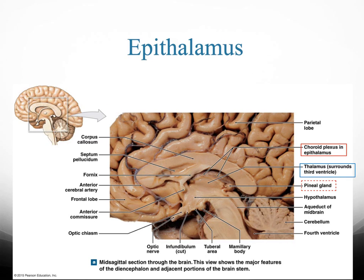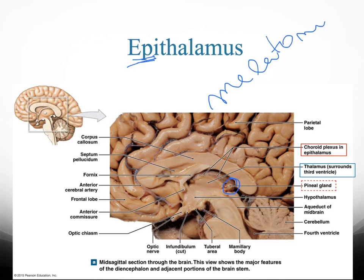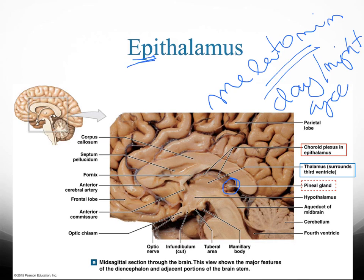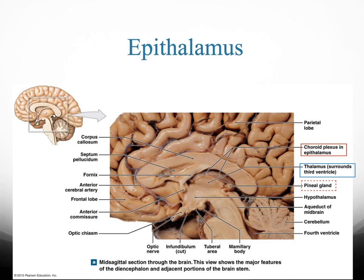Here's our epithalamus. Like the name says, 'epi' means on top of the thalamus, and it's this compartment right over here. The epithalamus is where your third ventricle is going to be located. The other important structure found in the epithalamus is your pineal gland, which produces melatonin and regulates your day and night cycle. That's what you should know about the epithalamus.